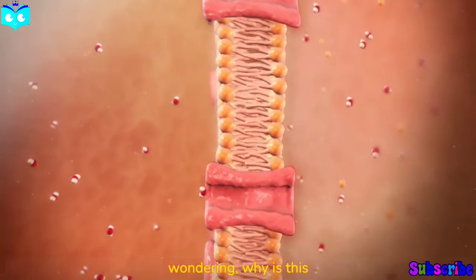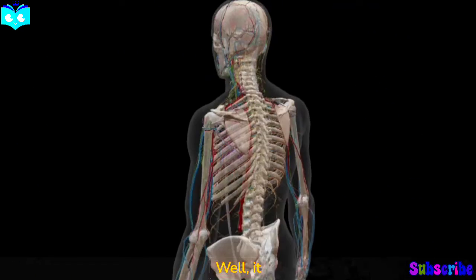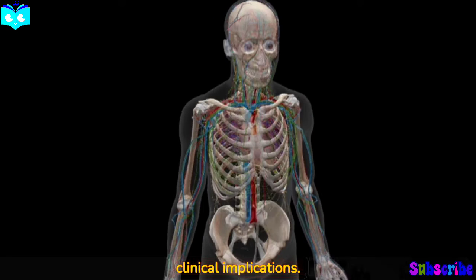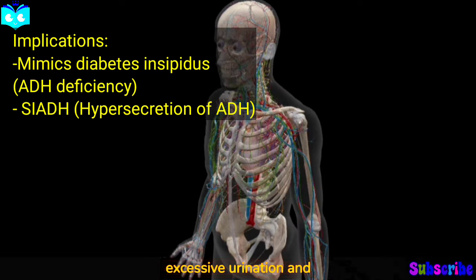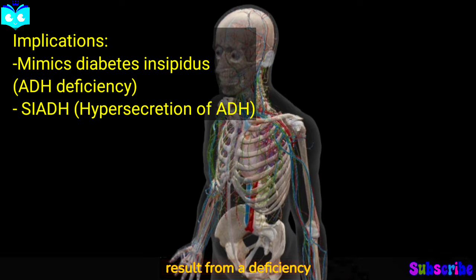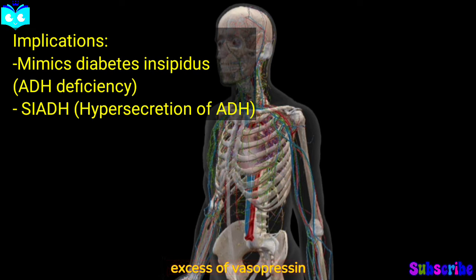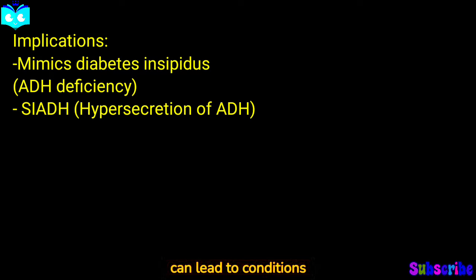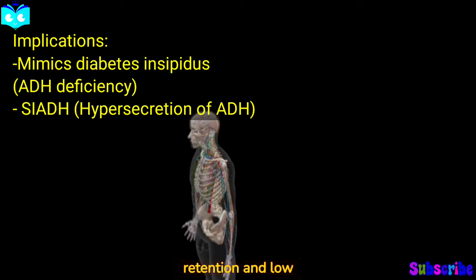Now you might be wondering why this hormone is so important. Well, it has significant clinical implications. Conditions like diabetes insipidus, characterized by excessive urination and dehydration, can result from a deficiency in vasopressin production or its receptor sensitivity. Conversely, an excess of vasopressin can lead to conditions like syndrome of inappropriate antidiuretic hormone secretion, SIADH, causing water retention and low sodium levels.